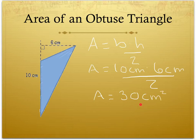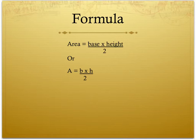Again, we didn't include any decimal places because the base and the height did not, but we still do include cm squared. From the past examples, you may have realized that this is the formula for the area of any triangle: area is equal to base times height divided by 2.